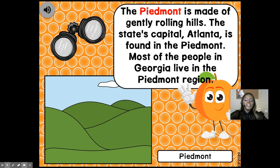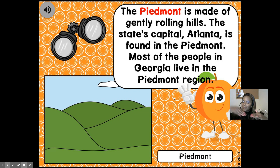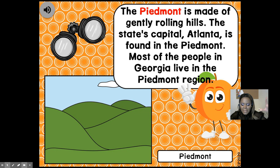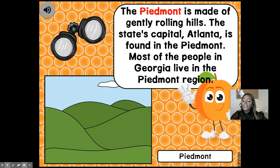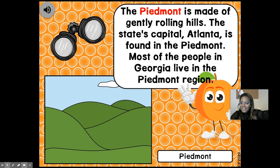The Piedmont is made up of gently rolling hills. As you ride around Atlanta, we go up and down — we gently roll. The capital is Atlanta, and that's in the Piedmont. Mostly everyone lives in the Piedmont area — it's the metropolitan area. That's your DeKalb, Clayton — that's your Piedmont, and most of us live in that area. When you walk outside, you're in the Piedmont. We're in the Piedmont. Our school's in the Piedmont.